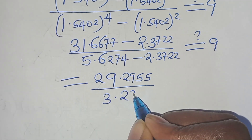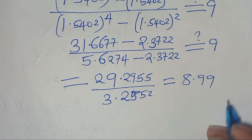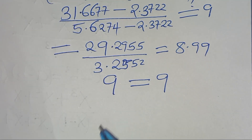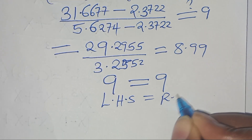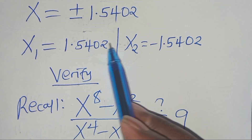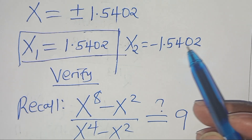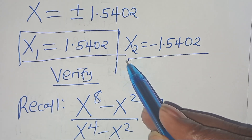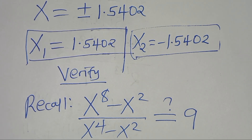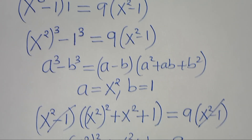This gives us a value of approximately 8.99, so if you round off here we have that 9 equals 9. This implies that the left-hand side equals the right-hand side, and this confirms that x1 equal to 1.5402 satisfies the equation, and x2 equal to minus 1.5402 also satisfies the equation. Please like this video and subscribe, see you in the next video, bye bye for now.